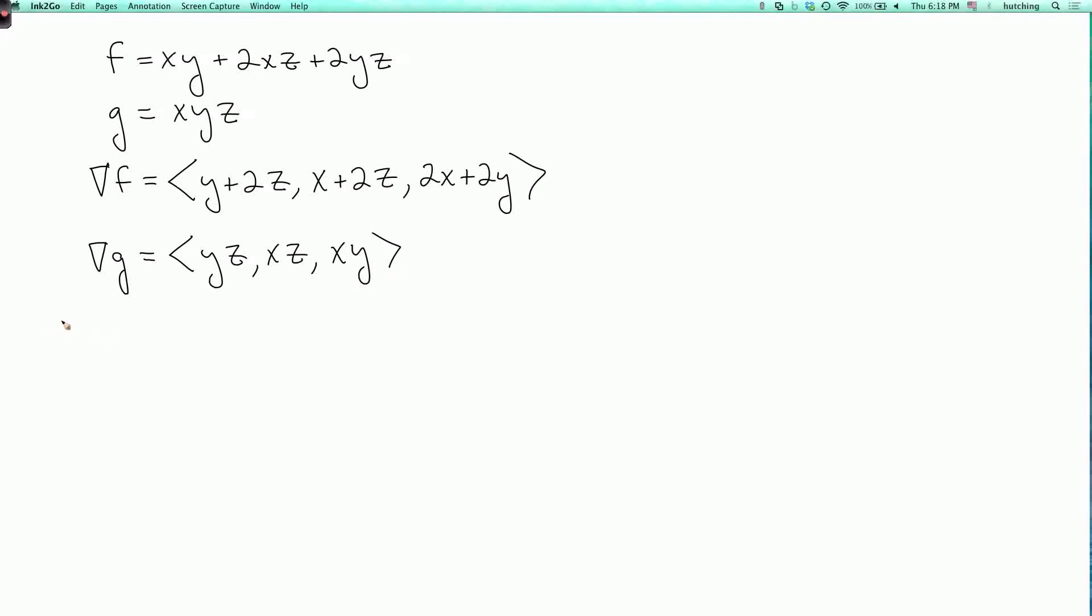So the equation gradient of f equals lambda times the gradient of g, when we express this in components, this is three equations. So the first equation for the x component is y plus 2z equals lambda times yz. And x plus 2z equals lambda times xz. And the third equation is 2x plus 2y equals lambda times xy. So let's number these. This is equation one, equation two, and equation three.